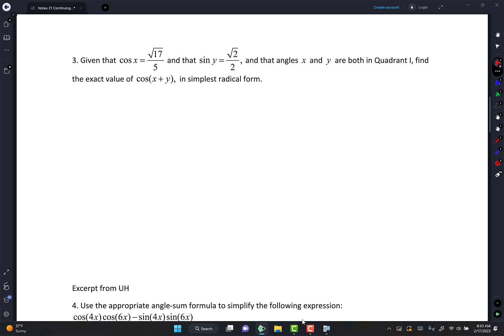Given that cosine X is square root of 17 over 5, and that sine Y is square root of 2 over 2, and that angles X and Y are both in quadrant one, find the exact values of cosine X plus Y. First, do you know what cosine X plus Y is? And hopefully you say yes. Yes, I do. Cosine X plus Y is cosine X cosine Y minus sine X sine Y.